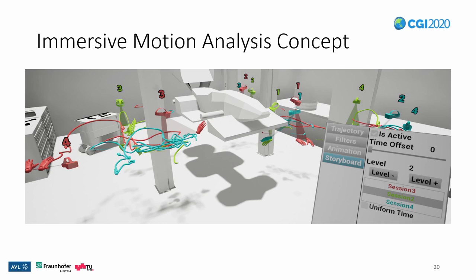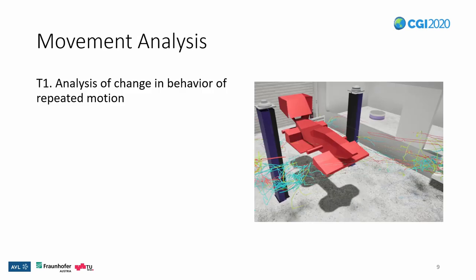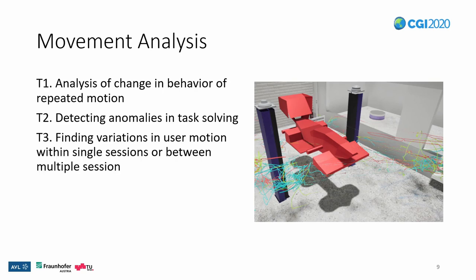For our work, we have identified three main tasks. Firstly, users should be able to analyze the change in behavior of repeated motion — this can be important for assembly tasks where the same task is performed multiple times. Second, it should be easy to detect anomalies in the movement, especially when comparing multiple sessions with similar expected behavior. And lastly, we want to give users a way to find variations in user motion in single sessions or between multiple sessions to see how different users perform in the virtual environment.